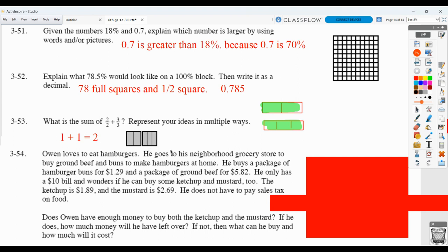Owen loves to eat hamburgers. He goes to the grocery store. He's going to buy ground beef and buns. He buys the package of hamburger buns for $1.29, the package of ground beef for $5.82. He only has a $10 bill and wonders if he can buy some ketchup and mustard too. Ketchup costs $1.89. Mustard is $2.69. He does not have to pay a sales tax on food. Does he have enough money to buy both? If he does, how much will he be left over? If not, what can he buy?